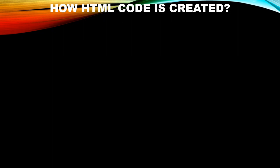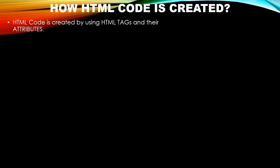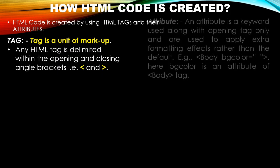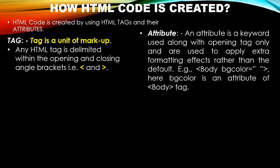How is HTML code created? HTML code is created using tags and their attributes. A tag is a unit of markup, placed within opening and closing angle brackets — HTML tags are delimited within angle brackets. An attribute is a keyword used along with an opening tag only, and is used to apply extra formatting effects beyond the defaults.